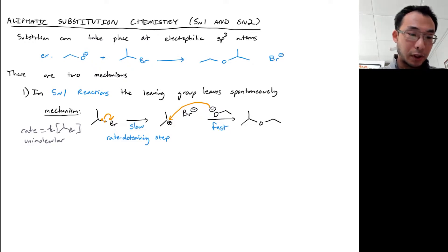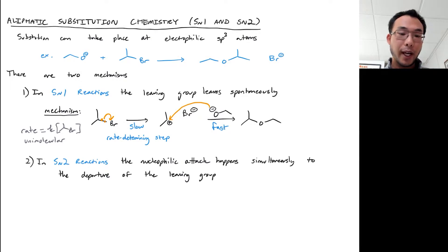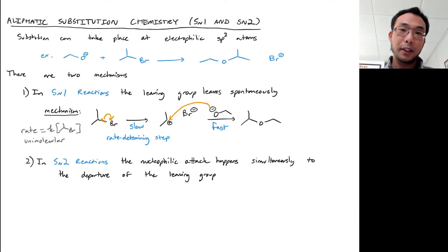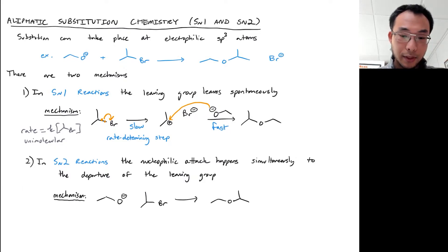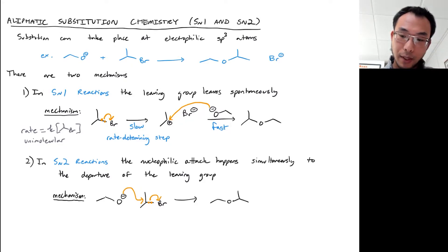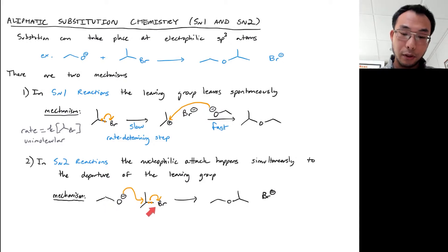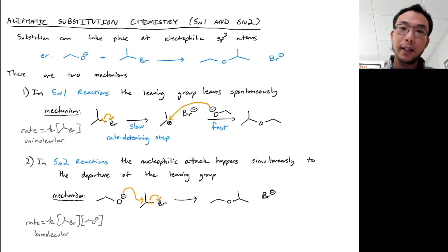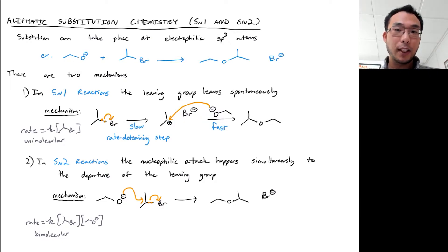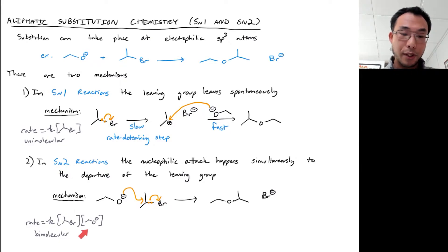The other mechanism is the SN2 reaction. In an SN2 reaction, both steps happen simultaneously — the nucleophilic attack and departure of the leaving group take place at the same time. The nucleophile attacks the electrophile, simultaneously leading to the leaving group leaving, giving us the product and the bromide leaving group. The rate depends on both the concentration of the nucleophile and the electrophile — a bimolecular rate law. That's where the '2' in SN2 comes from: it refers to the number of components in the rate law, not the number of steps.